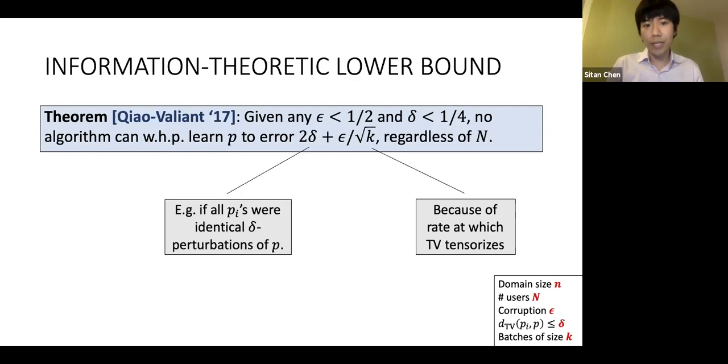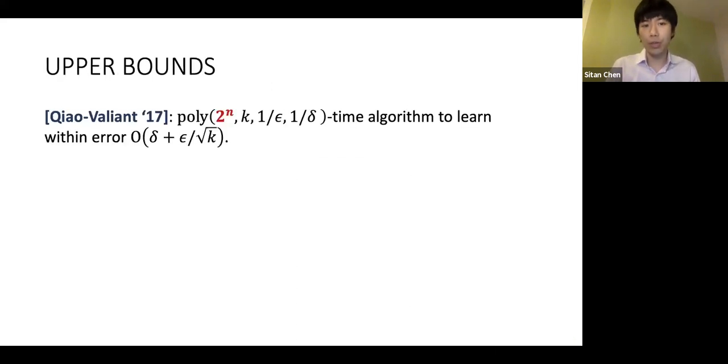So this is some basic impossibility result. The question is, can we actually tame this lower bound with an algorithm? In the same paper, Chow and Valiant show this in the affirmative, with an algorithm that runs in polynomial time in all parameters except the domain size.